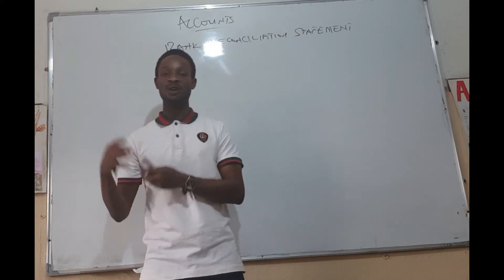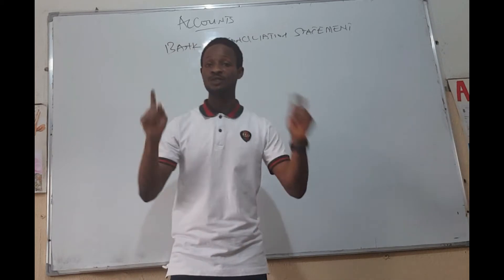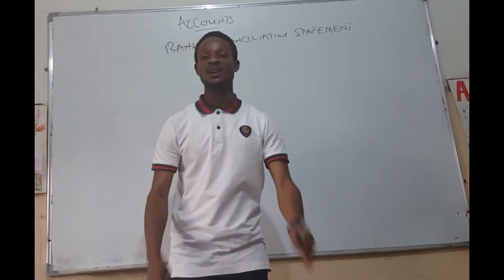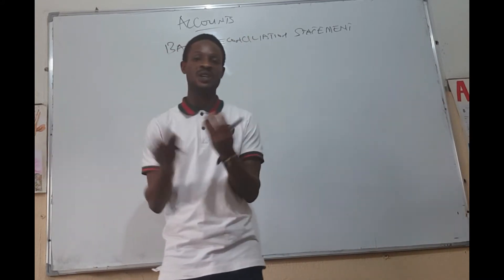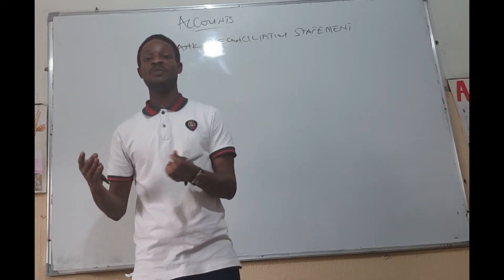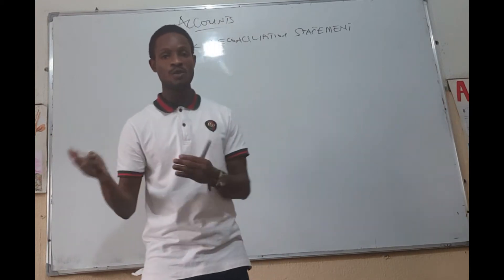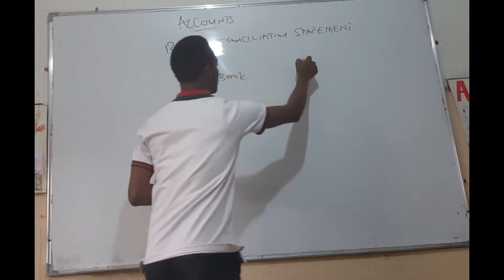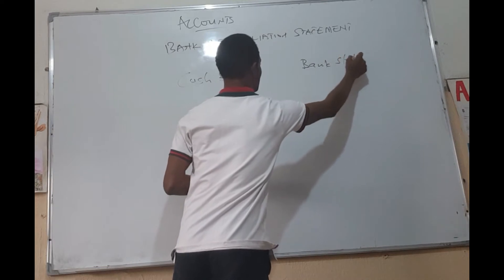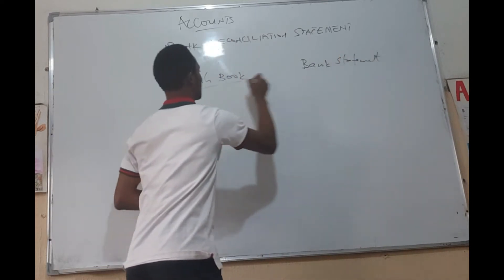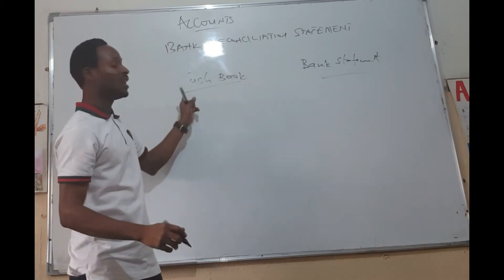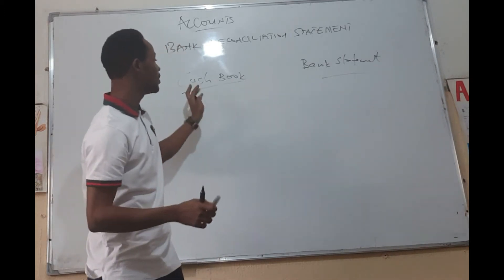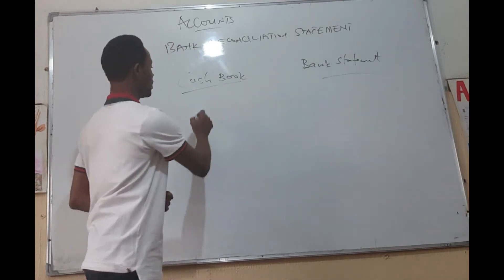This doesn't necessarily mean the bookkeeper or account clerk has made an error — not really, not always. We will address this in what we call the bank reconciliation statement. We will prepare it to reconcile — to bring together and explain whatever differences might have caused the discrepancy between the two books. The balance in the bank statement should equal the cash book balance, but as said, there are causes of disagreement between them, which include bank charges.